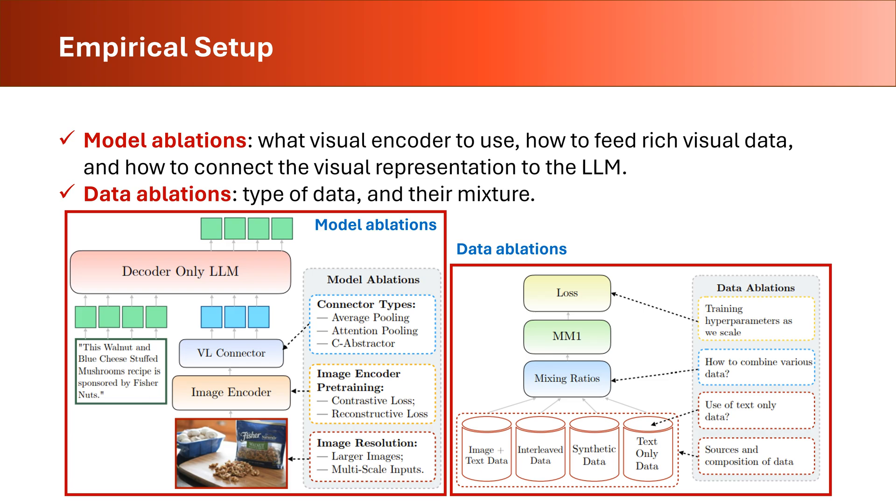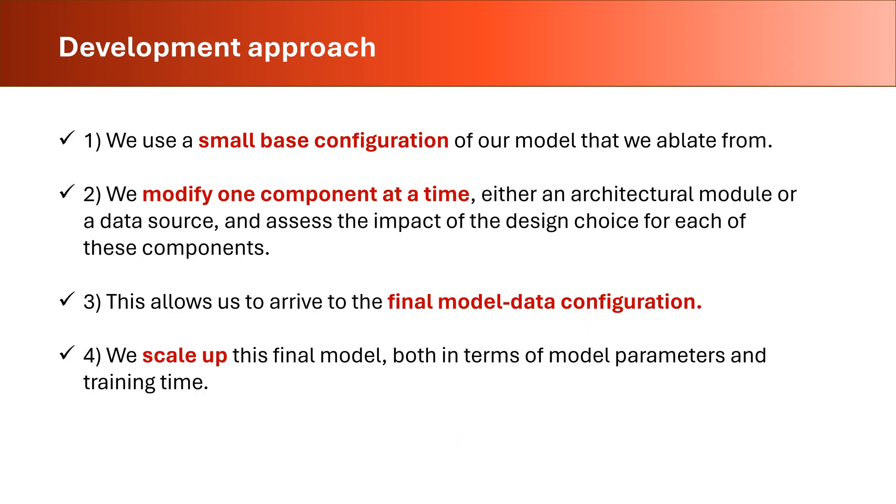Each step brought us closer to realizing a model that redefines multimodal learning. As we can see, two sets of ablations have been considered in this process. In the model ablations shown in the left figure, these parameters are varied to find their optimal values: connector types, image encoder pre-training, and resolution of the image. In the right figure, we can see data ablations. These include selecting sources and composition of the data, mixing ratios for the four data types, and training hyperparameters as we scale up the model.